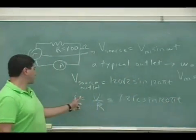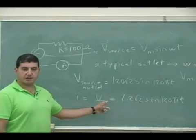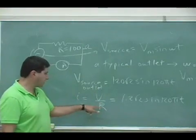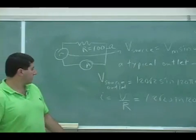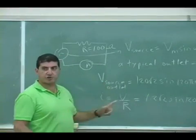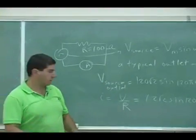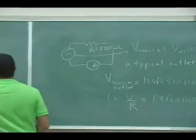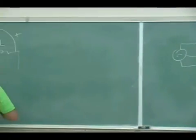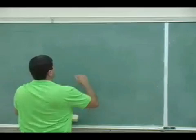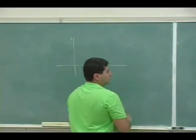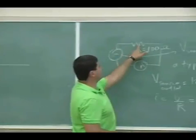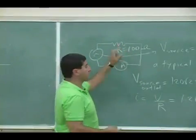And since the current is proportional to V, they're proportional, so the current in the resistor is just simply the voltage divided by the resistance. Therefore the current and the voltage of the source are in phase, right?